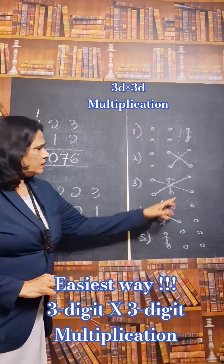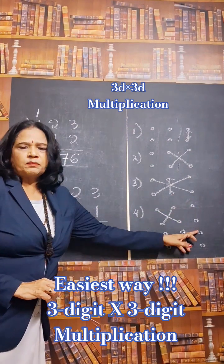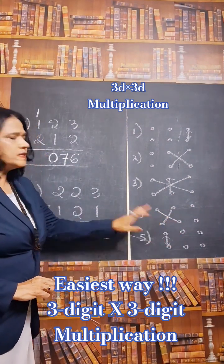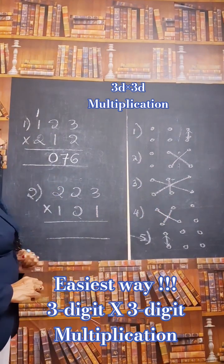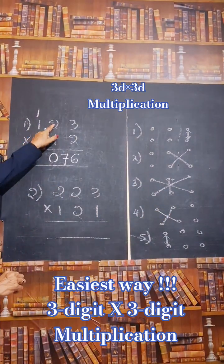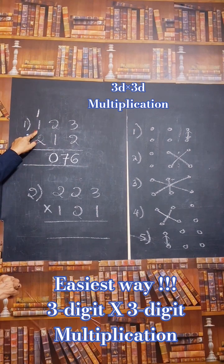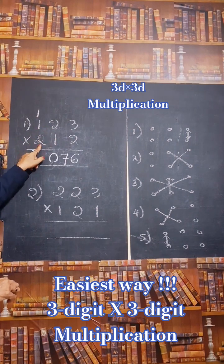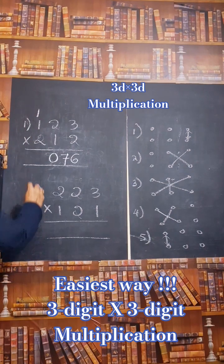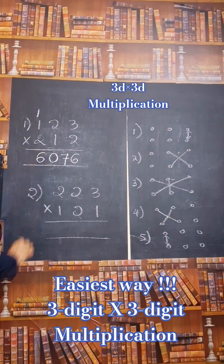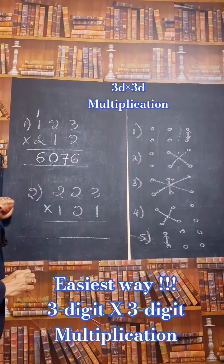Fourth step is don't use the units place number. Take only tens and hundreds. Cross multiplication and addition for tens and hundreds. So these two numbers. 1 into 1 is 1 plus 2 into 2 is 4. 4 plus 1 is 5 plus 1 carry. 5 plus 1 is 6. Okay. That is the fourth step.